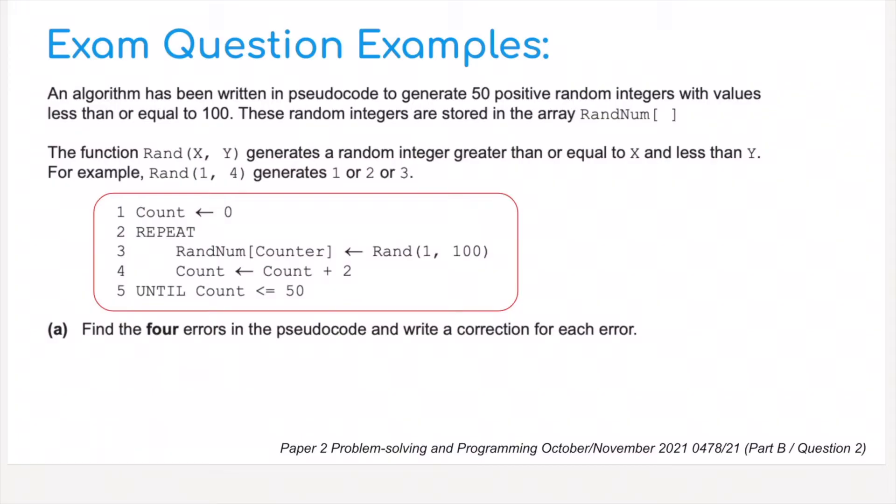The function rand x, y generates a random integer greater than or equal to x and less than y. For example, rand 1, 4, where the value is 1 for x and 4 for y, generates 1, 2, and 3, not generating the last number which is 4. So if you have a look at this code, there are four possible errors inside this.